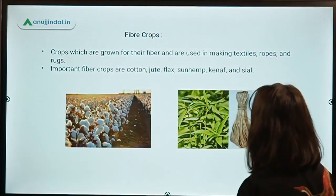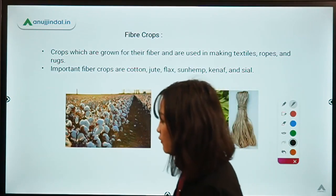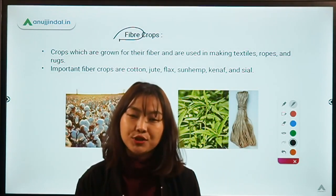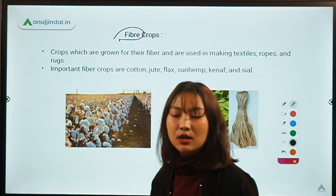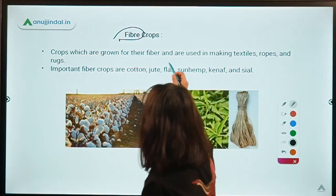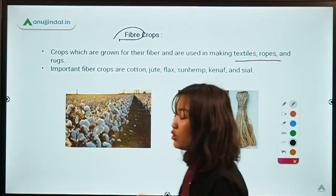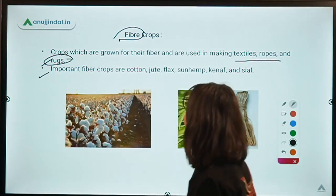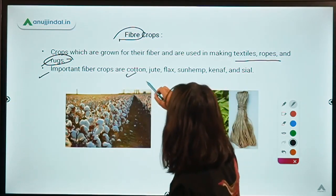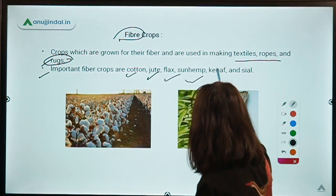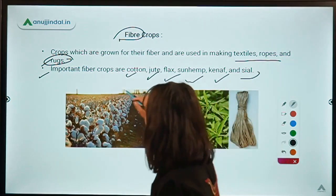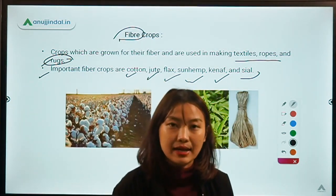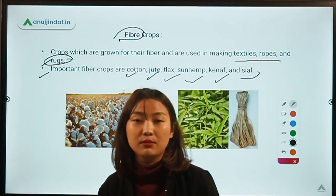The next slide covers fiber crops. As the name suggests, fiber crops are the crops grown to extract fiber. These are used for making textiles, ropes, and rugs. Examples include cotton, jute, flax, sunhemp, kenaf, and sisal.